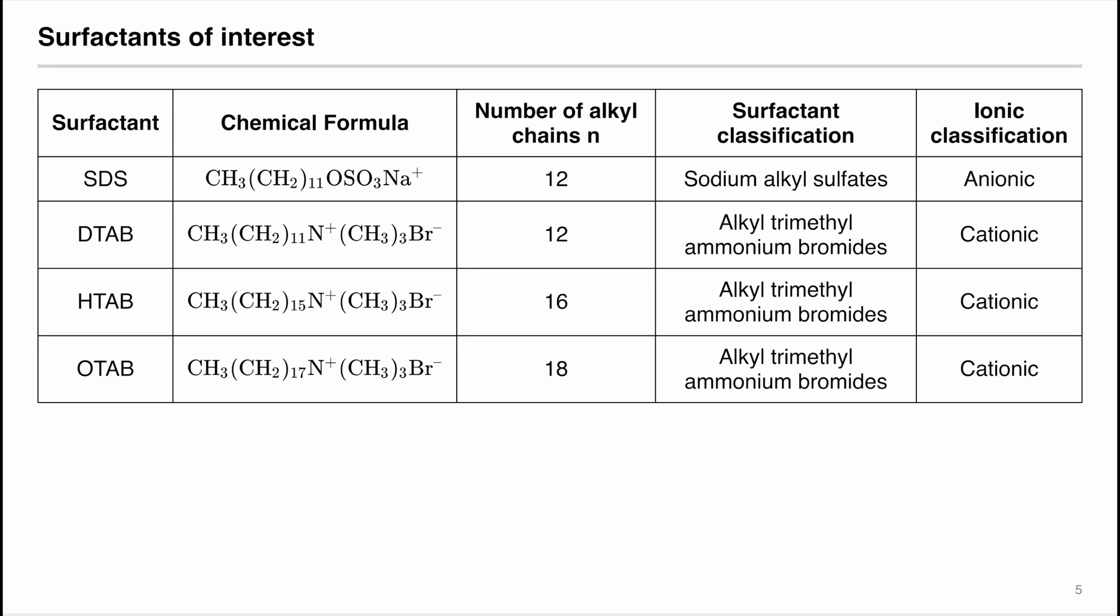In this experiment, you will be using the number of alkyl chains of 12, 16, and 18. You can compare DTAB, CTAB, and OTAB across the Klevens equation, and know that they are cationic. You can also compare SDS and DTAB since they have the same alkyl chain length, but they have different charges. One is anionic and one is cationic.